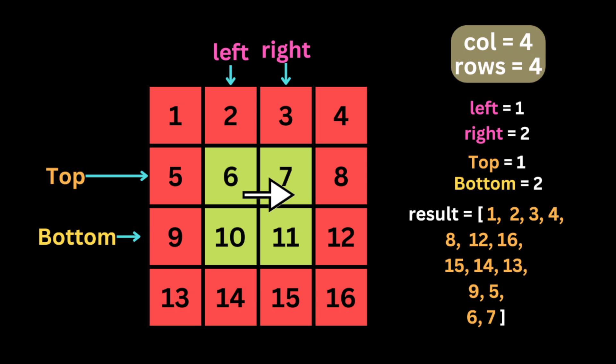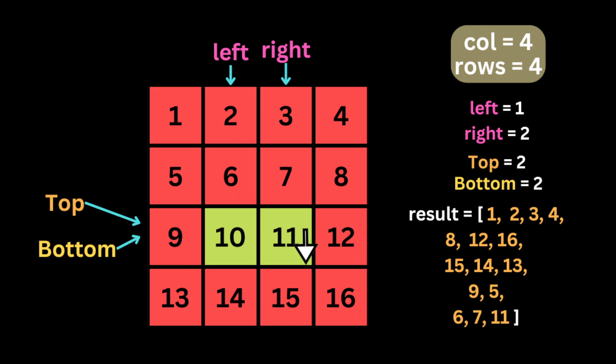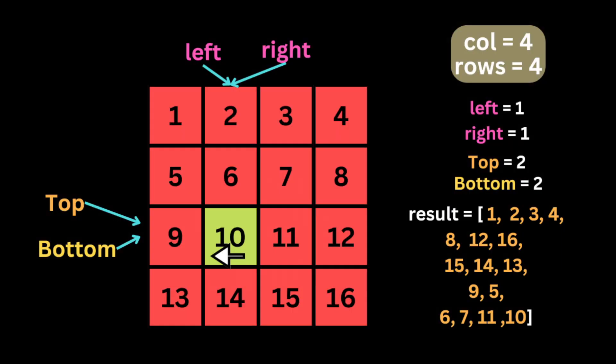We start another iteration, checking if left has not passed right and top has not passed bottom. We visit the second row from left to right — visiting 6 and 7 — and push them to the result array, then move the top pointer to the next row. Then we visit the rightmost column from top to bottom, which has only one number: 11, and push it to the result array.